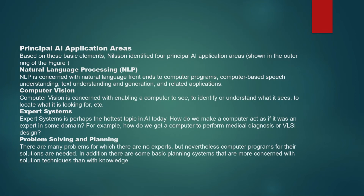Moving to the outer ring, which represents the principal application areas of AI. The first is NLP, Natural Language Processing. This is a very common and hot topic of research nowadays. It is basically concerned with natural language front ends to computer programs, computer-based speech understanding, text understanding, language generation, and converting one language to another — like Google Translate.